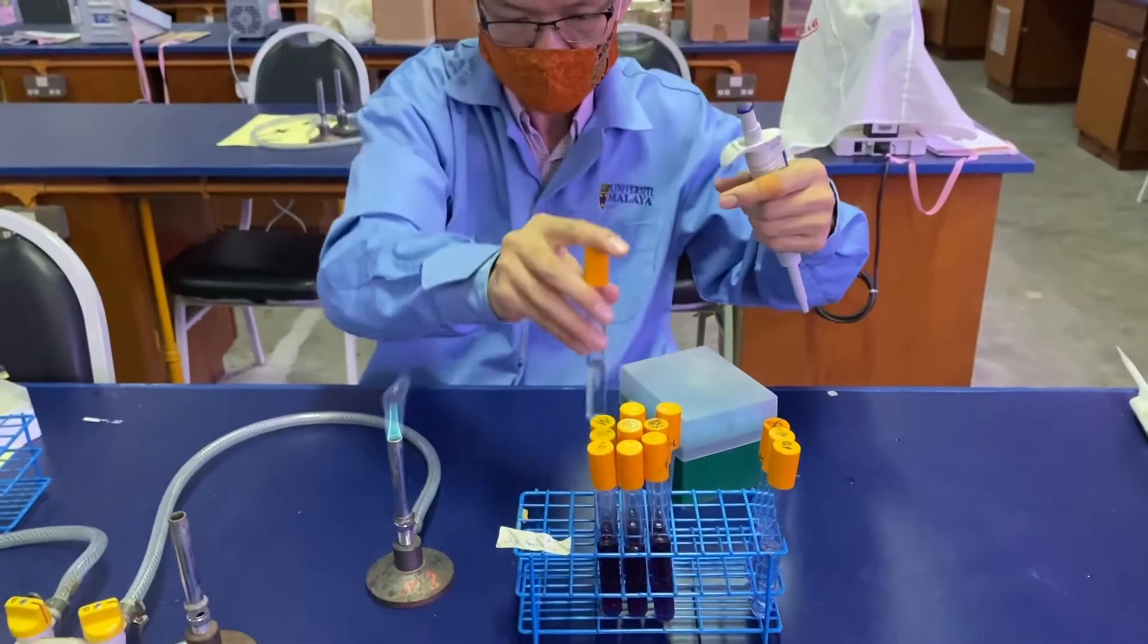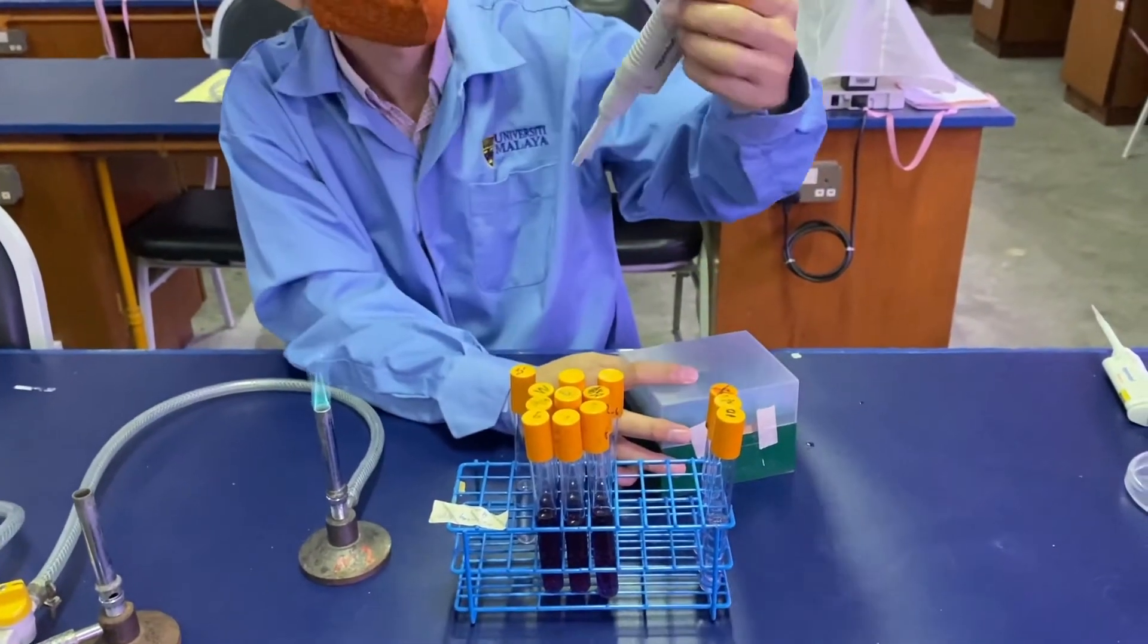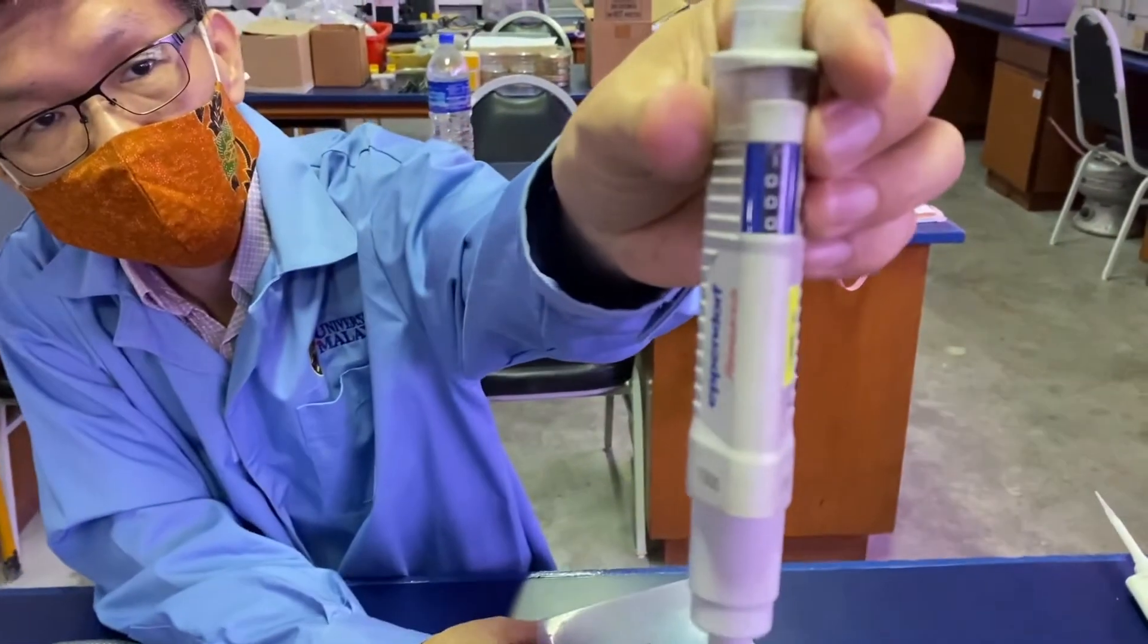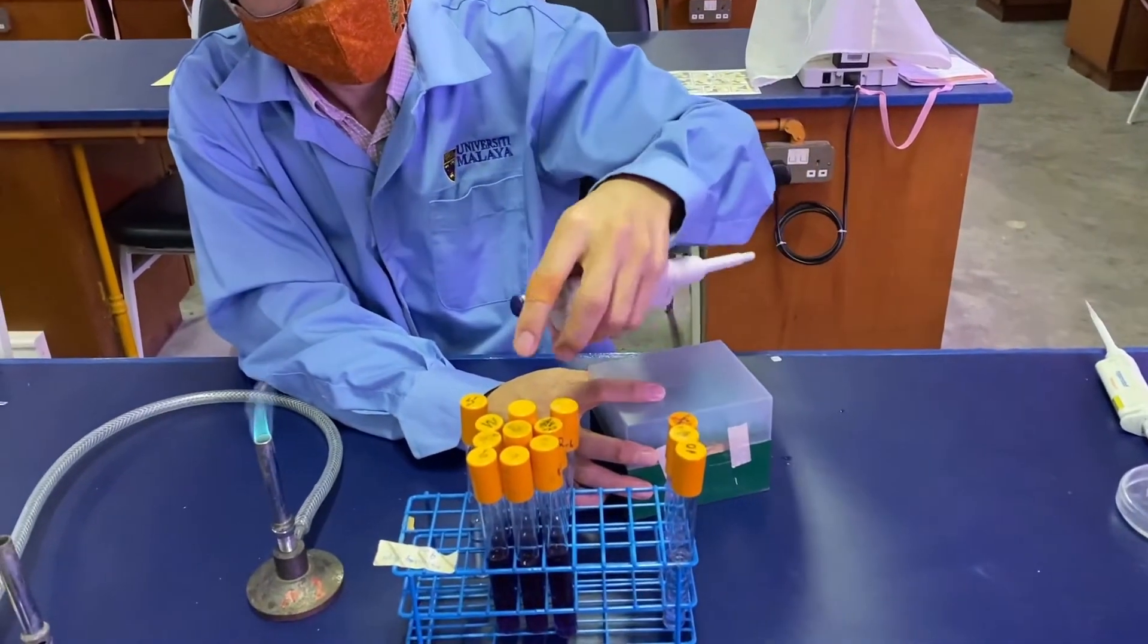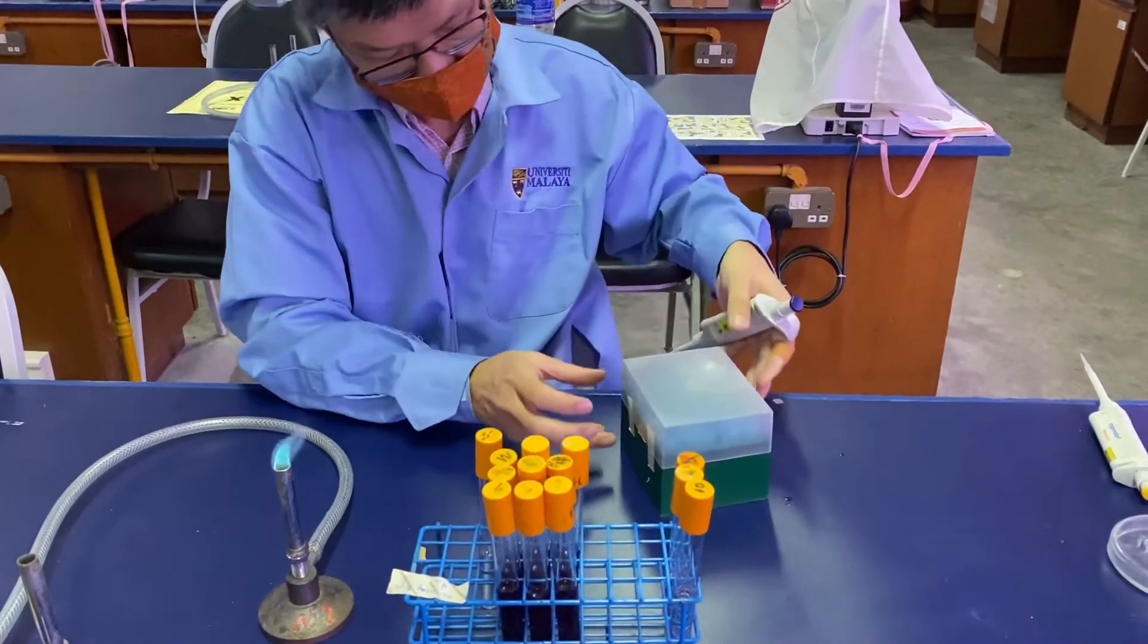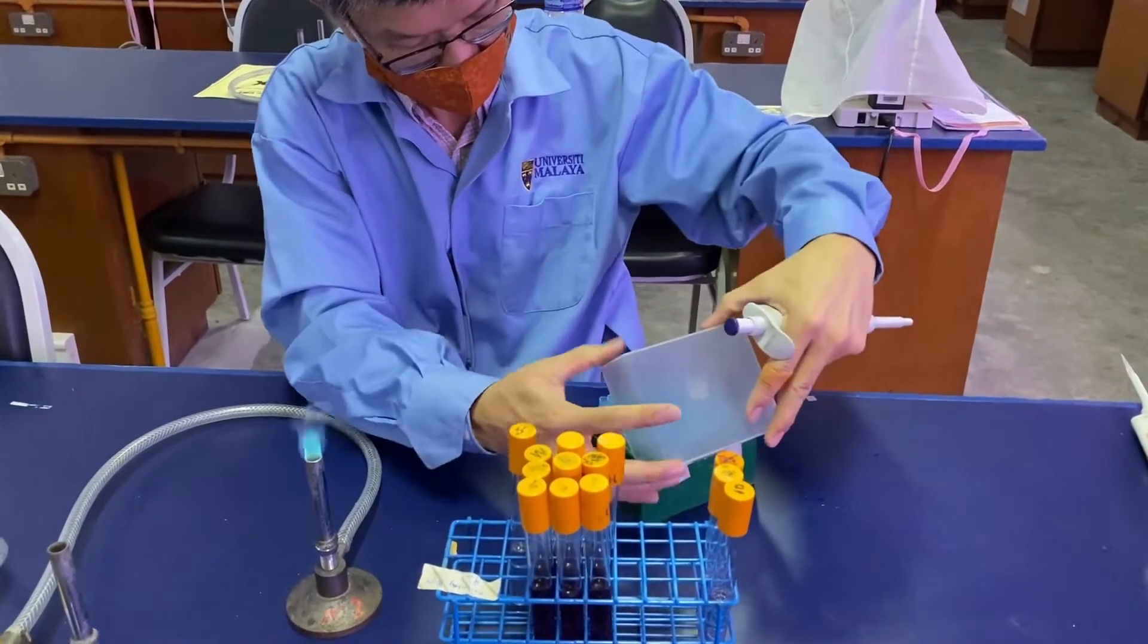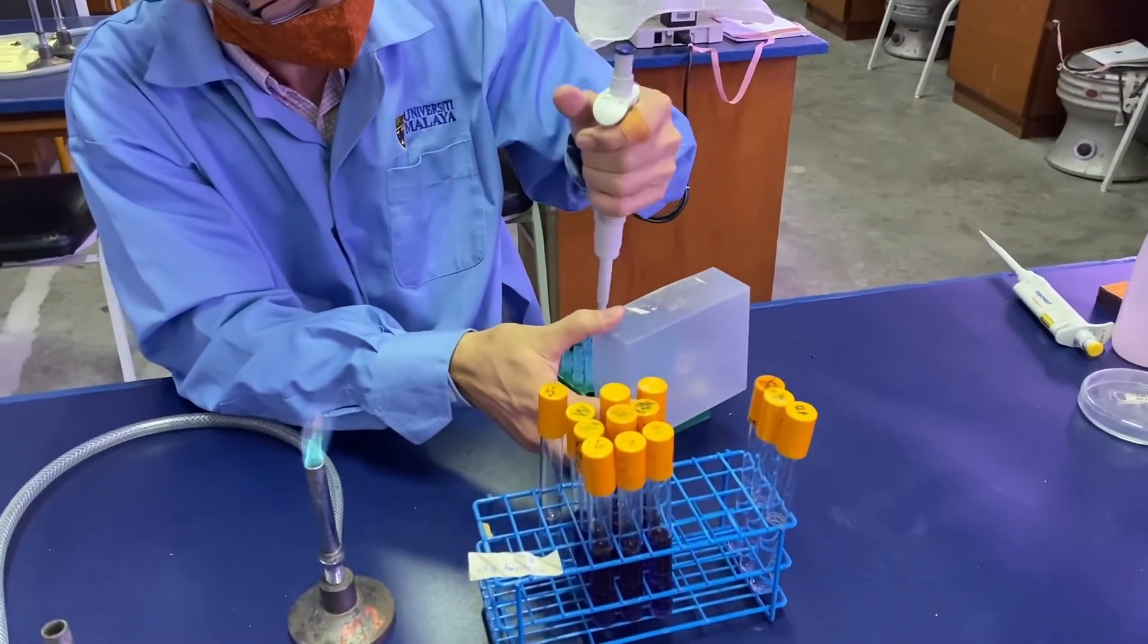This is the sample. All the test tubes have been filled with nine milliliters of broth and saline. Now we will use a blue micropipette to place one thousand microliters, or one milliliter, of sample into the first dilution tube.